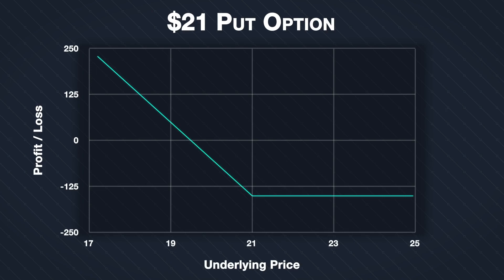When a trader buys a put option, they are hoping that the underlying price falls, and specifically that it falls below their strike price. The strike price, though, is not the price at which the trader will break even at expiration. This is because the option was not free — a premium was paid. This premium must be taken into account to calculate where the option will break even if held to expiry.